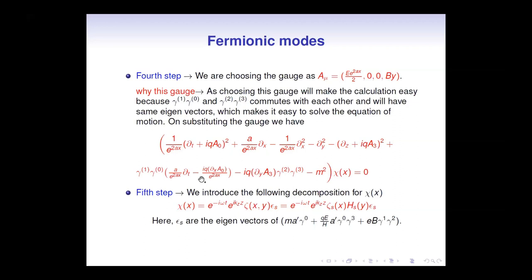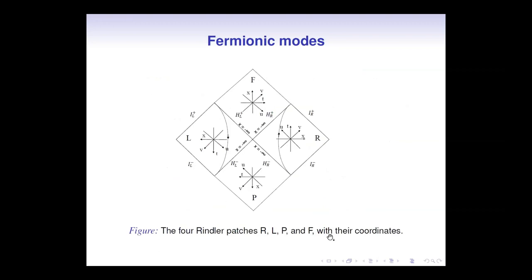We then chose our ansatz for chi such that epsilon_s are the eigenvectors of the relevant operator. The picture shows the four Rindler wedges: right, left, past, and future. We will quantize our field on the right wedge and on the left wedge. For the right wedge, we have two positive-frequency incoming modes — one for IR-minus and one for HR-minus — and likewise two negative-frequency in-modes, one for HR-minus and one for psi-minus. In total there are four in-modes, and due to the two spin states of fermions, there are eight in-modes in total, and likewise eight out-modes for the right wedge corresponding to HR-plus and IR-plus.